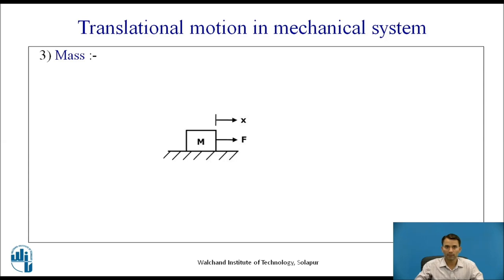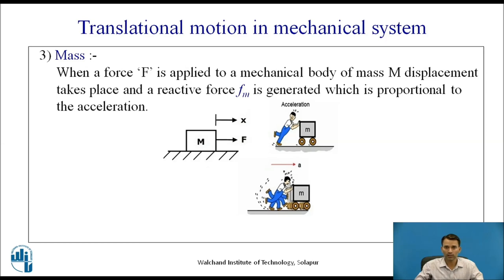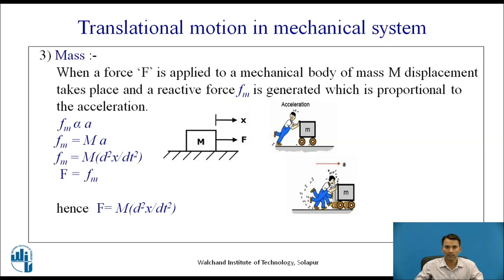The third element is mass. When a force F is applied to a mechanical body of mass m, displacement takes place and a reactive force Fm is generated, which is proportional to the acceleration. Fm = m × a, which can be written as Fm = m × (d²x/dt²). By Newton's third law, F = Fm, hence F = m × (d²x/dt²). If there are two displacements for a mass, the equation remains the same: F = m × (d²x/dt²).